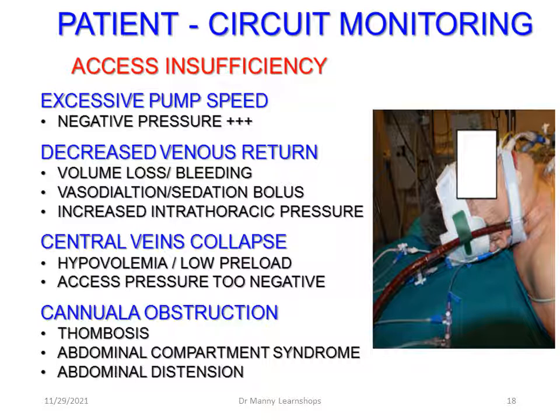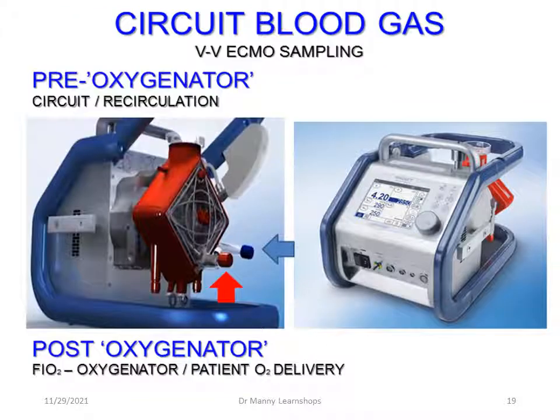Access insufficiency occurs when the circuit is not working properly and presents with excessive pump speed and very negative access pressure. Causes include decreased venous return from volume loss or bleeding, vasodilation from sedation boluses, increased intrathoracic pressure limiting venous return, and central veins collapsing due to hypovolemia. The veins collapse from the sucking effect of negative access pressure. Cannula obstruction can also result from thrombosis or abdominal compartment syndrome with elevated abdominal pressures, so a nasogastric tube is important for gastric decompression.